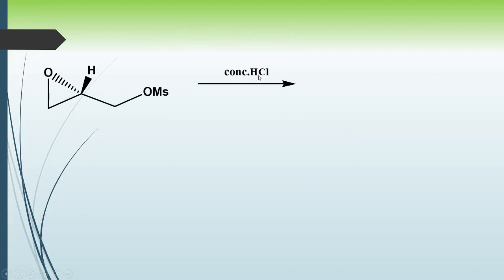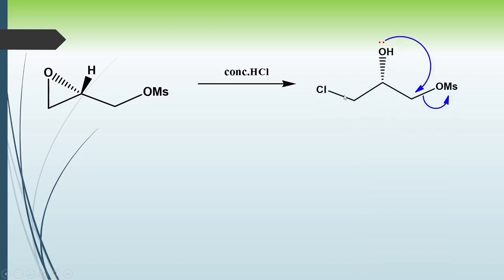In the next step, concentrated HCl provides H⁺ and Cl⁻. The Cl⁻ attacks the carbon of the epoxide ring, causing ring opening, and the resulting O⁻ attracts the proton, giving a molecule bearing a Cl and an OH group.